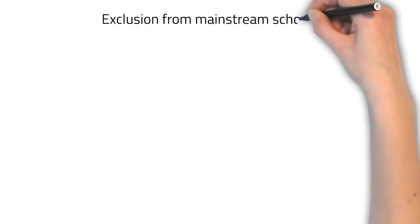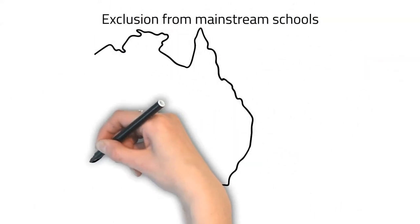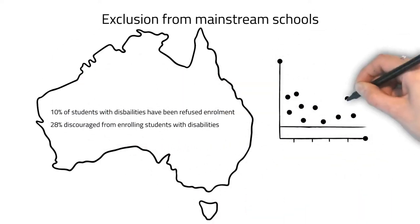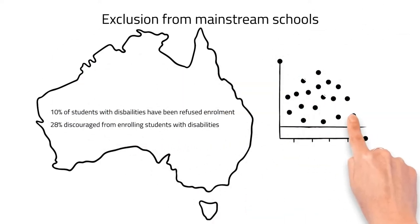Unfortunately, Sarah and her family scenario isn't uncommon. Many families continue with the struggle of successfully enrolling their child with disabilities into their school of choice on a full-time basis.